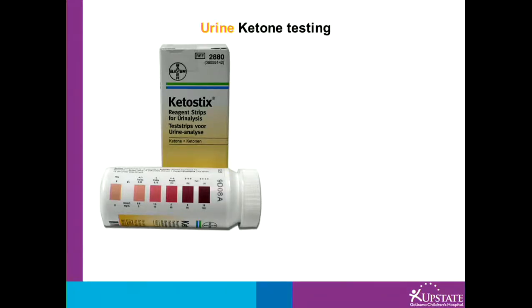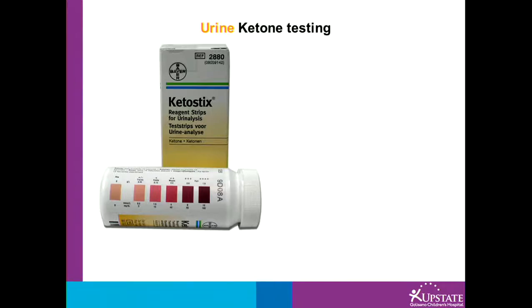Remember to test your ketones and call your health care provider if ketones are small or more on urine or over 0.6 on blood. This is an example of urine keto sticks — they come in a bottle, and remember they are only good for 6 months once opened. Dip the urine keto stick into a urine cup or fresh urine, or pee right over the stick for exactly 15 seconds, then compare it to the legend on the bottle. Levels of small or more on the urine keto sticks need to be reported — call your health care provider.